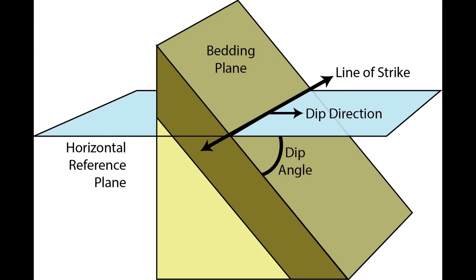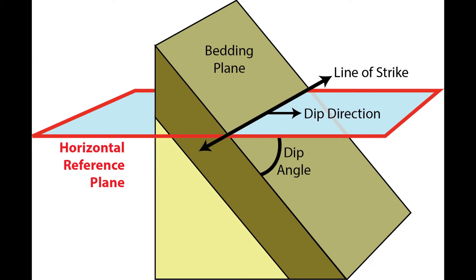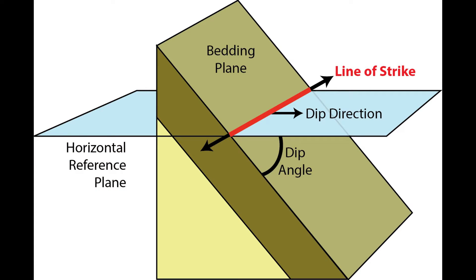A complete planar orientation measurement consists of three parts: strike, dip angle, and dip direction. With planar measurements, the horizontal reference plane is really important. Strike is the directional bearing of the intersection line between the plane being measured and the horizontal reference plane. Because it is a line, the bearing of strike can have two possible directions that are 180 degrees from each other. Both are correct.